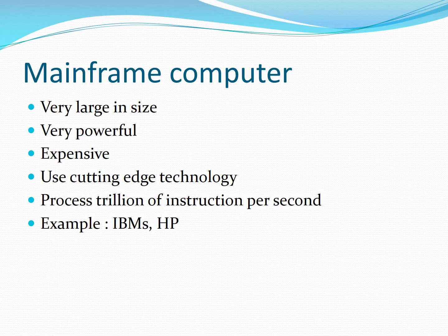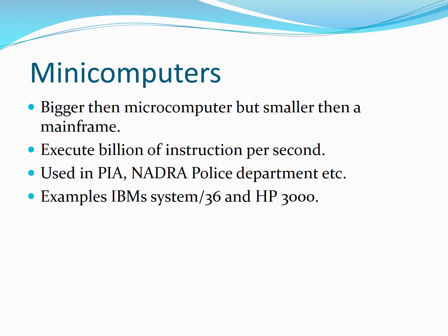The HP 16500 series and HP Integrity Superdome are examples of mainframe computers. Mini computers are bigger than microcomputers but smaller than mainframe computers. They execute millions of instructions per second — higher than microcomputers but less than mainframe computers. They are used in organizations like PIA, NADRA, and police departments. Examples of mini computers include IBM System 36 and HP 3000.